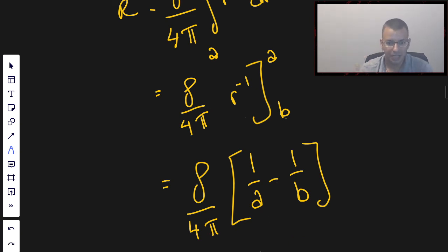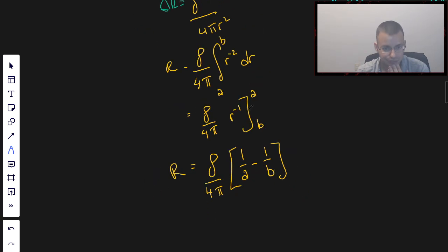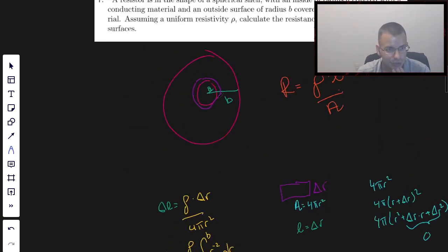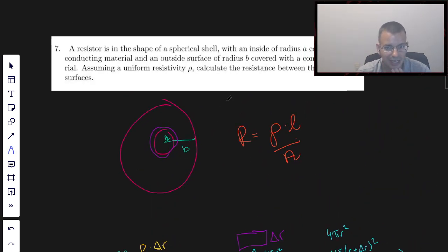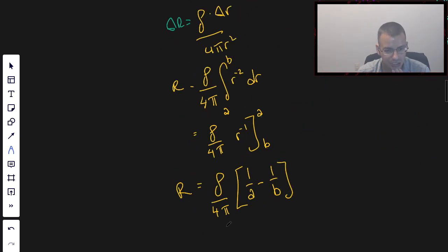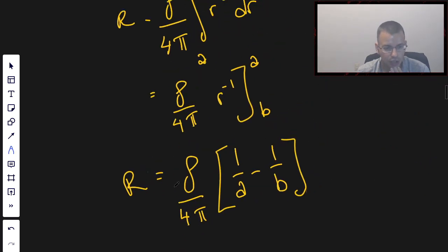So, we get a positive number overall, which makes sense because resistance should be positive. Let's see if that answers the question. Calculate the resistance between the two surfaces. The resistance is ρ/(4π), that comes from the area of a sphere, 1/A minus 1/B. Yep. And that's how we approach this one.